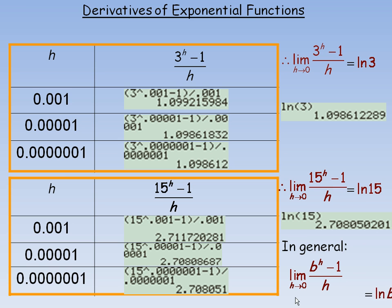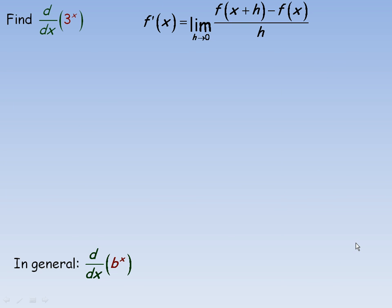So in general, the limit as h tends towards 0 of b to the h minus 1 over h should be the ln of that base, the ln of b. And we'll use this idea in the next page when we're differentiating.